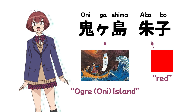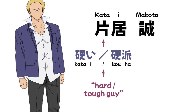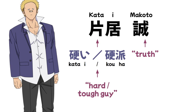Katai Makoto: 'Katai' is a homophone for the word meaning 'hard' or 'tough,' and in the series Makoto is described as 'Koha,' which uses the same kanji and basically means 'tough guy.' His first name, Makoto, means 'truth,' which may reference the fact that his true self is very sensitive and shy, though people always assume he is a hardcore delinquent.